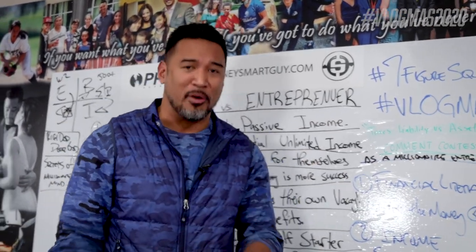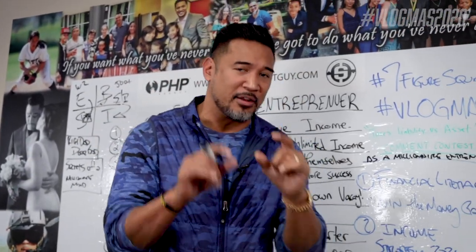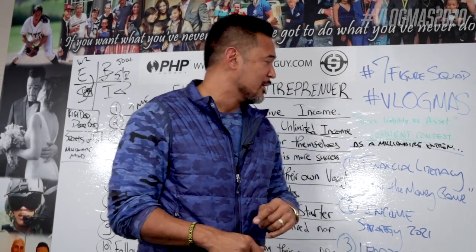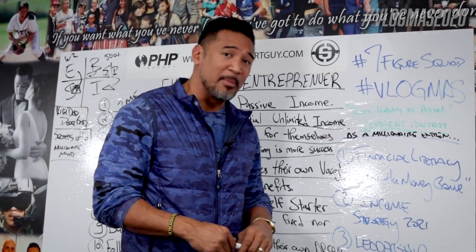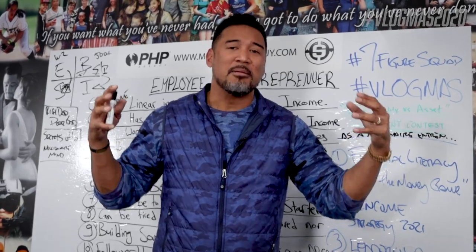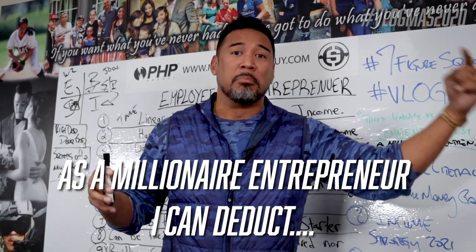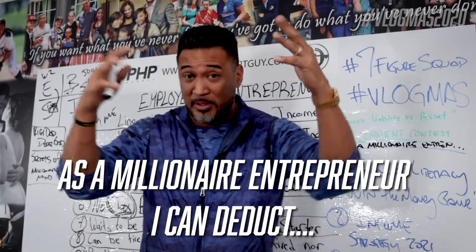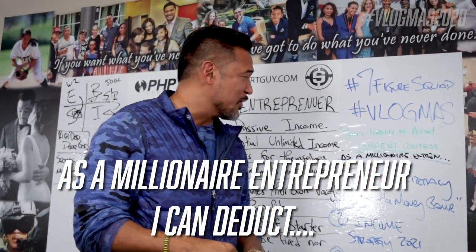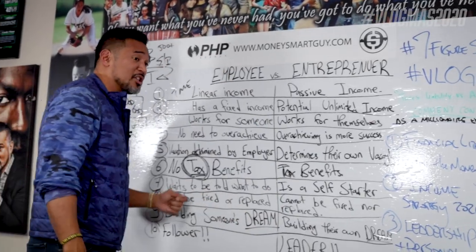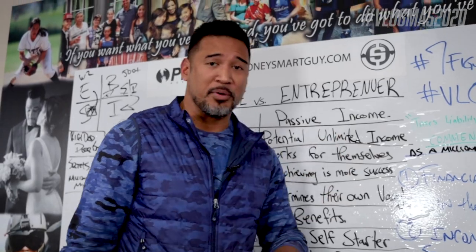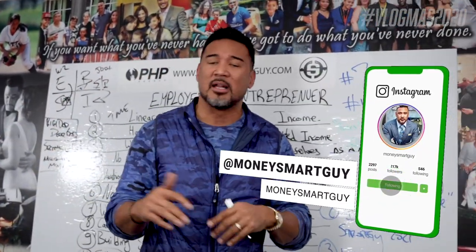We also have a comment contest — the top three people who are first to comment on either Facebook or YouTube will get a free t-shirt from the Seven Figure Squad merchandise store. Fill in the blank in the comments: 'As a millionaire entrepreneur, I can deduct blank.' I want to see what you guys are thinking about. Drop your comments below — I love the interaction.